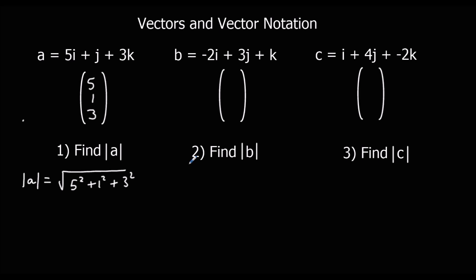So it's the length of the line between where we started and where we ended up. 5 squared is 25, plus 1, plus 9 is 35, so we've got square root of 35.